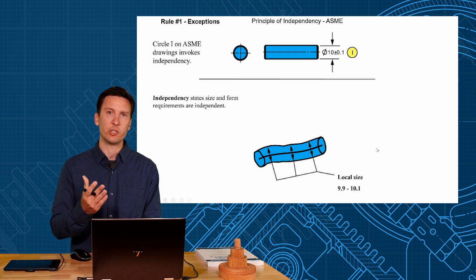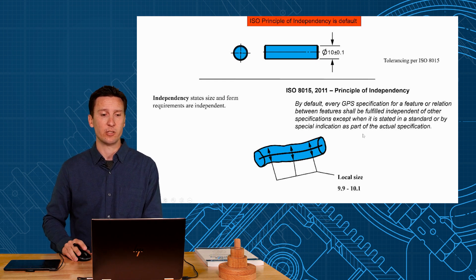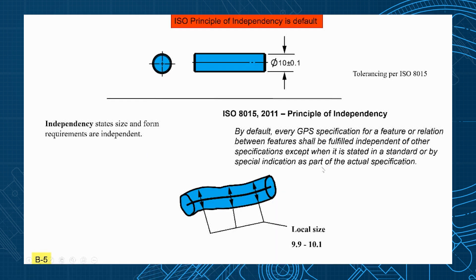Now why I'm mentioning this is this is actually the default in ISO standards. ISO principle of independency is the default for size. So we have to go to ISO 8015 2011 which states the independency principle. By default every GPS specification for a feature shall be fulfilled independent of other specifications. This means that size is fulfilled independent from the form.